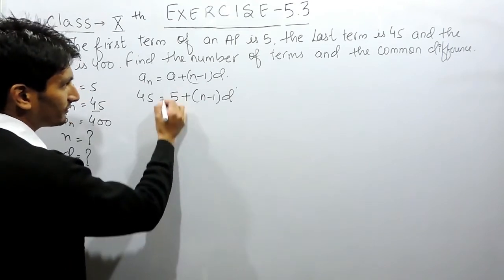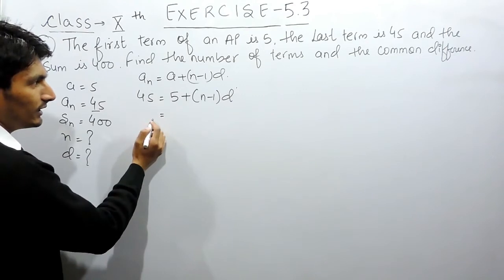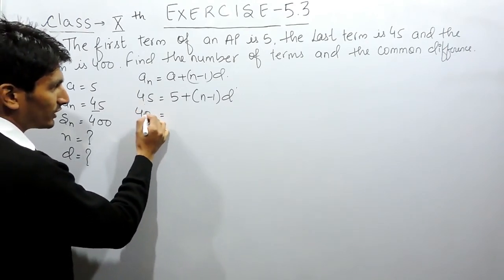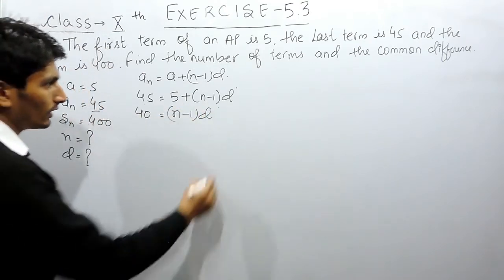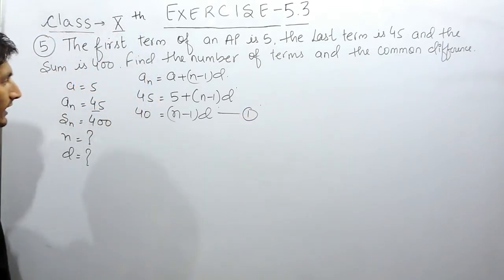If I solve this further, this 5 can be shifted to this side and plus will become minus here, and 45 minus 5 will become 40. And this will be equals to this. Now this can be considered as first equation. Now the sum of these nth terms is given to you.